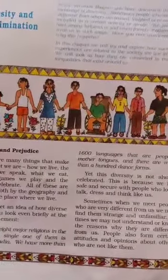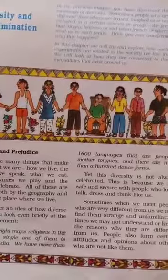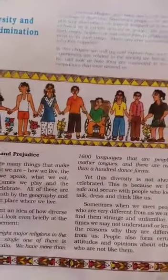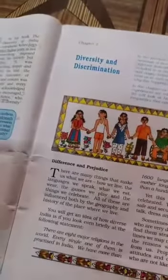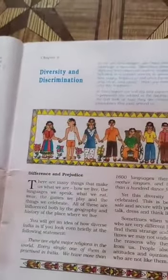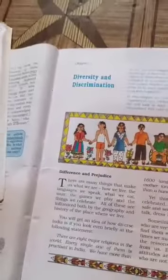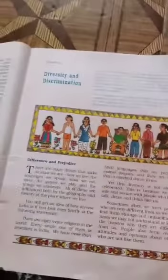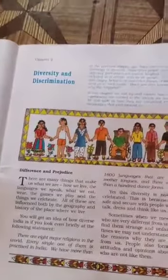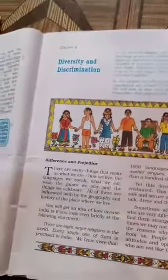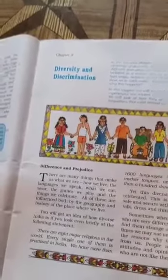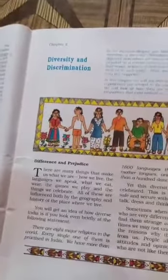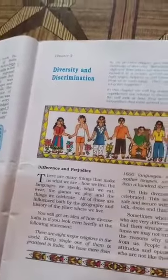Prejudice means to judge people negatively or to see them as inferior. If we see others as inferior, it means we are not respecting them — we are not respecting people who are different from us. For example, if we think English is the best language and that other languages are not important, we are judging those languages negatively. As a result, we might not respect people who speak languages other than English.